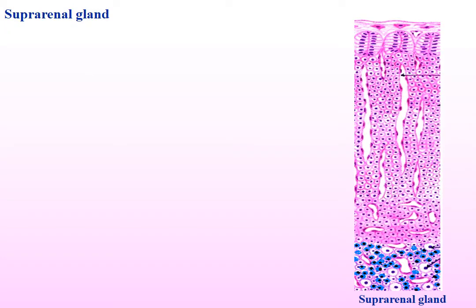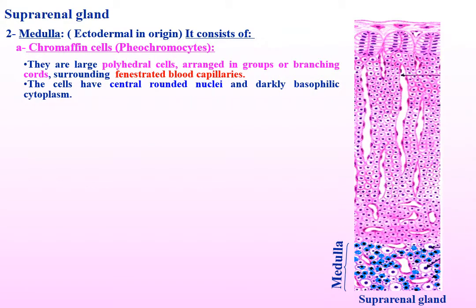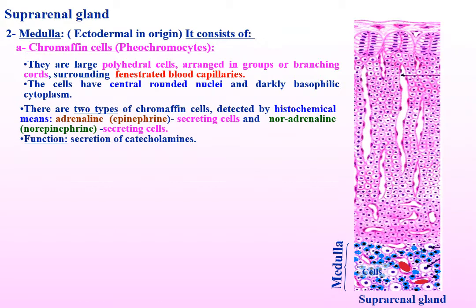The suprarenal medulla is ectodermal in origin. It consists of chromaffin cells and few ganglion cells. They are large polyhedral cells arranged in groups or branching cords surrounding fenestrated blood capillaries. The cells have central rounded nuclei and darkly basophilic cytoplasm.